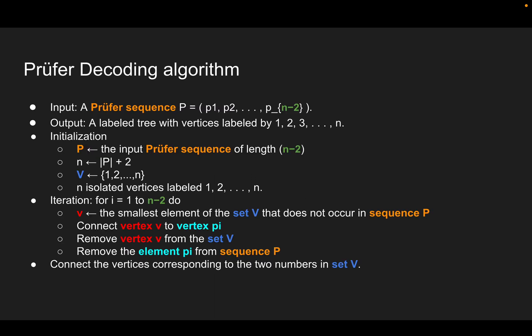Prüfer decoding algorithm. The Prüfer decoding algorithm takes the input of a Prüfer sequence of length n-2 and outputs a labeled tree with vertices labeled by 1, 2, 3 until n.